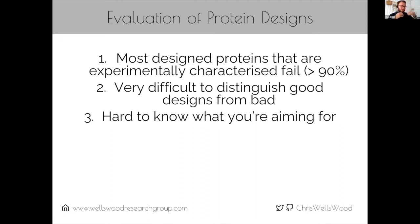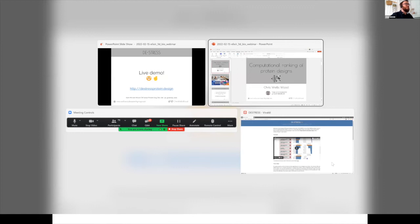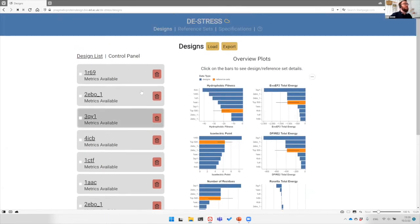We developed DeStress — Design Structure Evaluation Services — to tackle these challenges. You go to the web page at destress.protein.design, upload designs in PDB format generated by any program such as Rosetta, and they are sent to our server which calculates a whole bunch of metrics. I've pre-calculated some metrics using existing PDB structures, and you can see it calculates various parameters — hydrophobic fitness, statistical potentials, all-atom force fields, packing quality, aggregation propensities — with new ones loading as they finish.